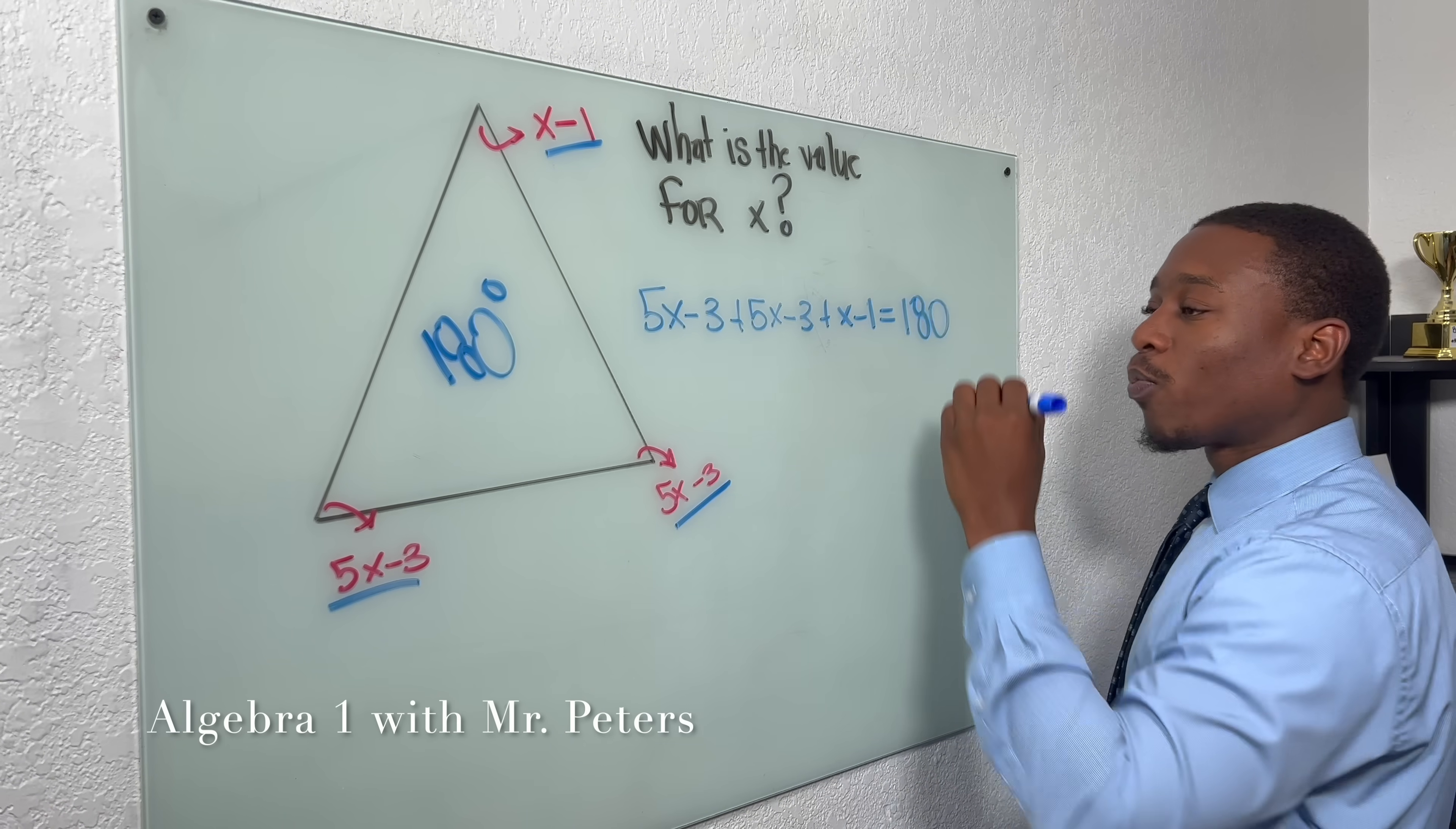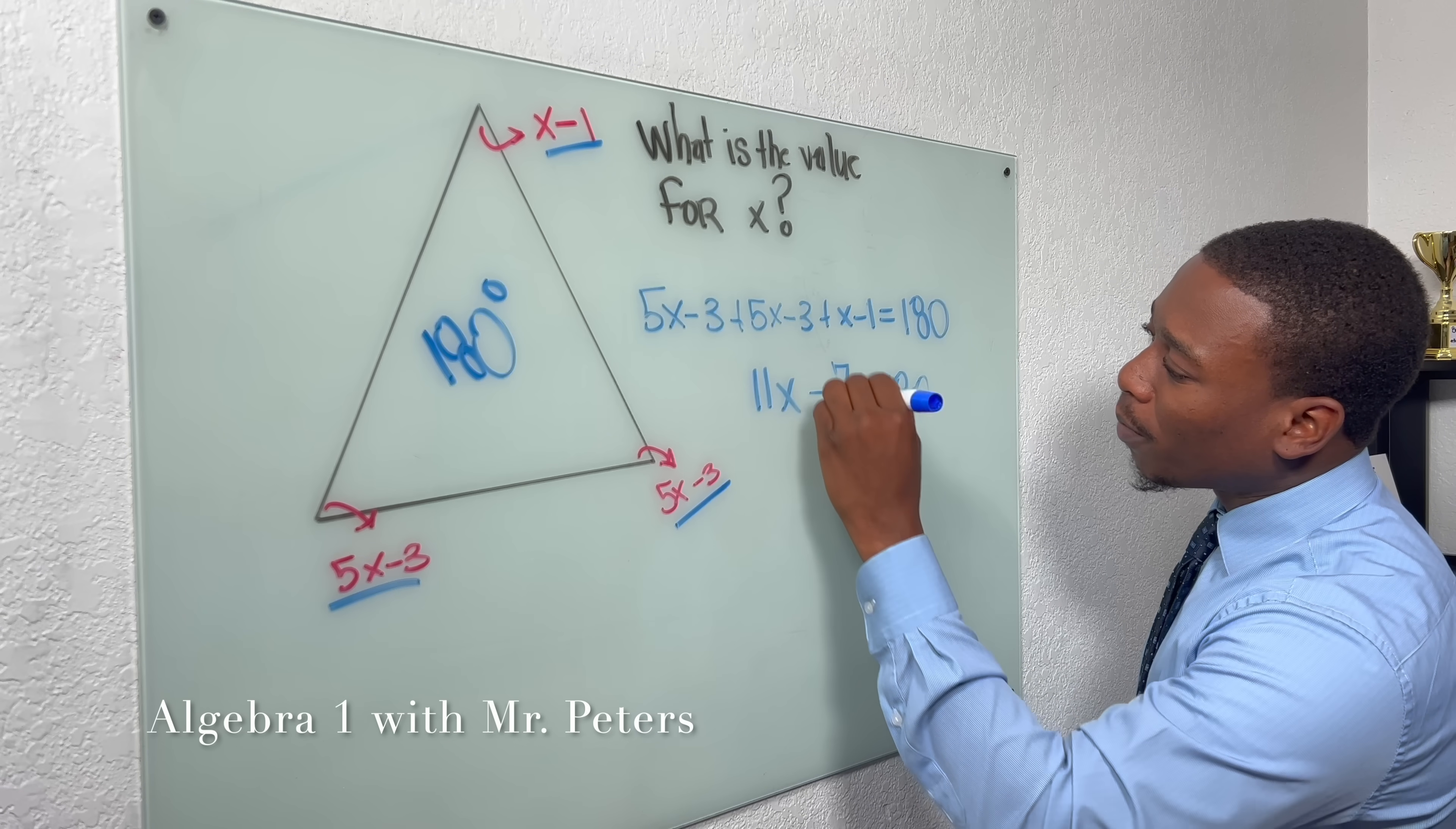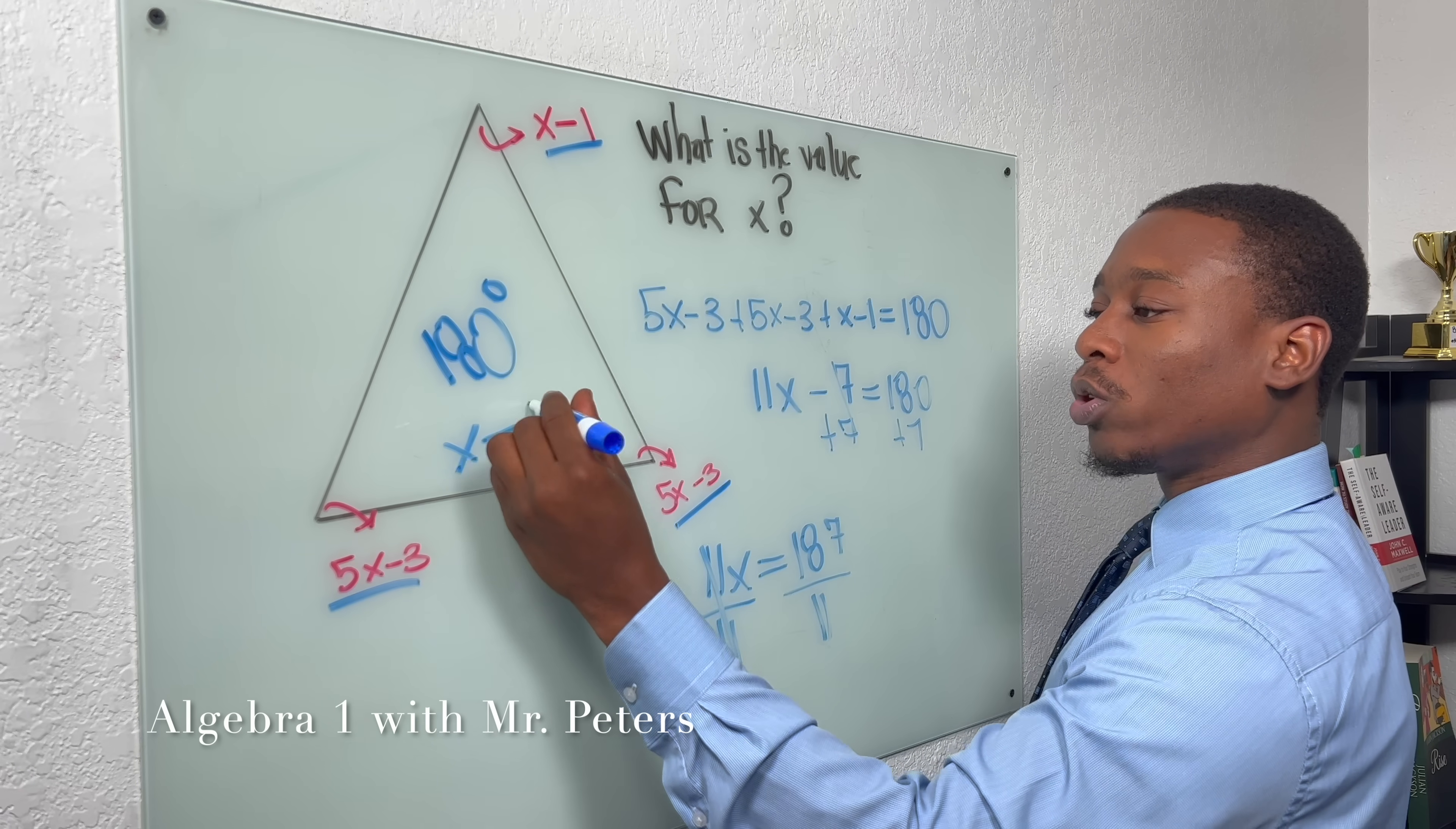So after we set this problem up now, we're now going to combine our like terms. We're going to get 11x - 7 is equal to 180. And this is turning into a regular equation. So we get x by itself by moving 7. And our final answer would be 11x is equal to 187. Now we're going to divide by 11. Once we do, we're going to get x is equal to 17.